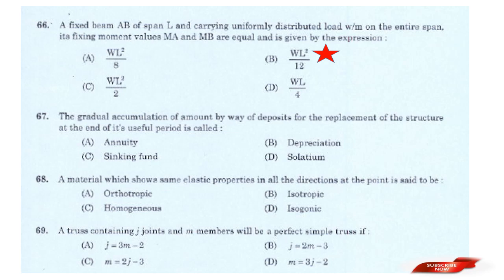Question: The gradual accumulation of an amount by way of deposit for the replacement of the structure at the end of its useful period is called? Answer: Option B — Depreciation.